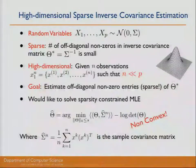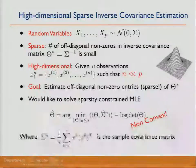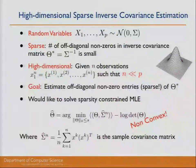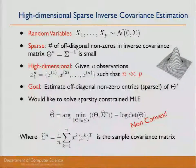Ideally, what we would like to do is solve a sparsity-constrained maximum likelihood estimation, which places an L0 constraint on the size of theta star — the number of non-zero elements. This is a non-convex problem due to the L0 constraint, so we need to think of ways to circumvent this. Note that sigma hat n is the sample covariance matrix. In the high dimensional setting, simply using the sample covariance matrix will most often fail, so this is not a good estimate.